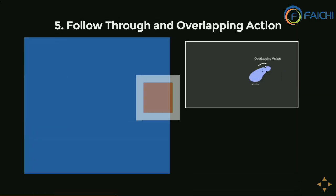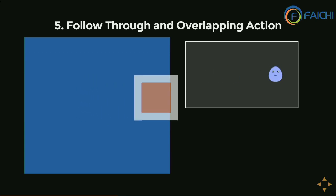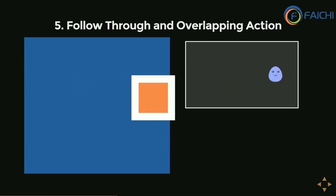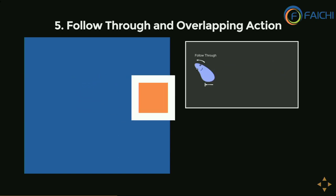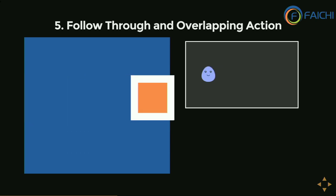Follow-through and overlapping — any action cannot start or stop all of a sudden. If a car starts moving fast suddenly, the tires screech and the body feels thrust and moves backward. When the car stops abruptly, the body moves forward and so does the driver. On a website, an element appearing from the left side to the right side can be animated to move slightly forward, come back, and settle at its original position.